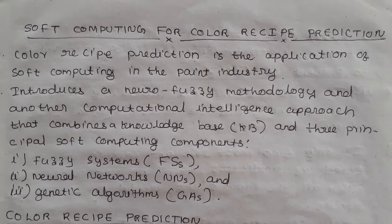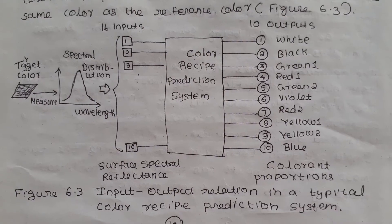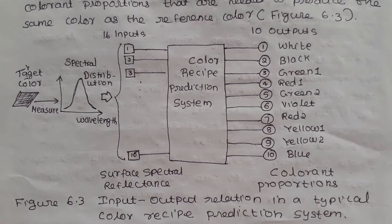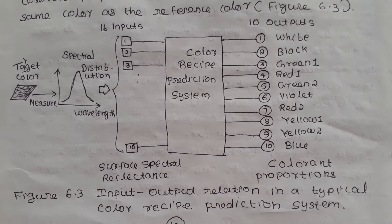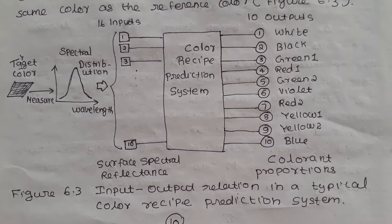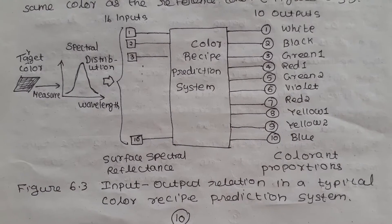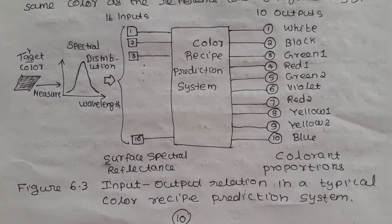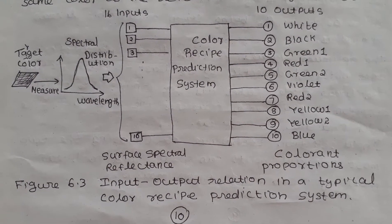The next topic is soft computing for color recipe prediction. Color recipe prediction is the application of soft computing in the paint industry. It introduces a neurofuzzy methodology and another computational intelligence approach that combines knowledge base and three principal soft computing components: fuzzy systems, neural networks, and genetic algorithms.